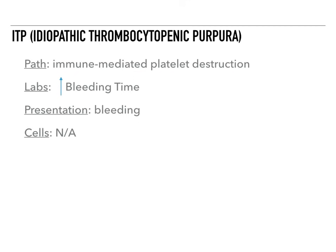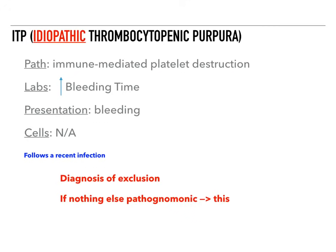So when they brush their teeth, maybe they bleed more. Cells that you'll see on a smear — there are none. This is often following a recent infection. The way I like to remember ITP is to focus on the word idiopathic. This is really idiopathic, and it's a diagnosis of exclusion. You go for ITP as the answer when there is no pathognomonic finding suggesting any other bleeding disorder.